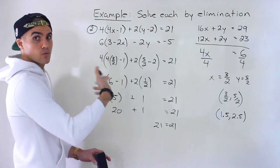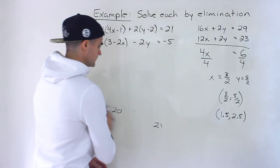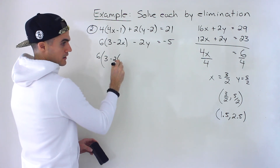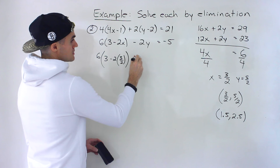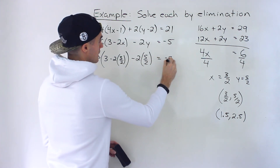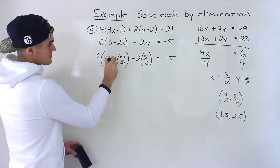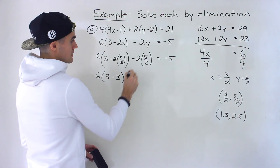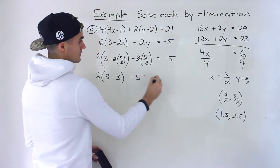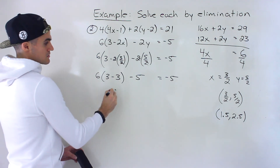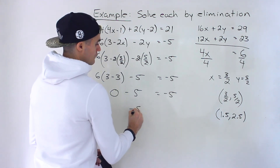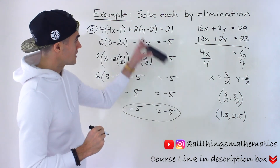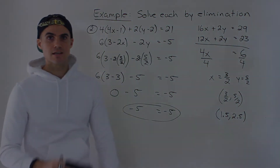So the check pans out with the first equation. Now with the second one, we'll have 6 bracket 3 minus 2 times the x value, which is 3 over 2, minus 2 times 5 over 2. Let's see if that equals negative 5. Notice the 2s cancel out, so we'd end up with 6 times 3 minus 3, which will just be 0. And then these 2s cancel out, so we just end up with negative 5. 6 times 0 is 0 minus 5 — negative 5 is equal to negative 5. So that's how both of those checks are done. This works with both equations, so we could be pretty confident that that is the point of intersection.